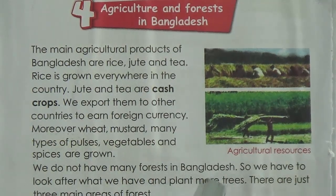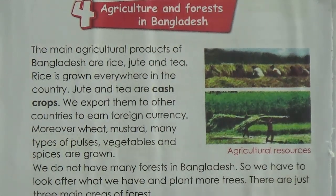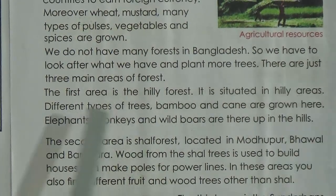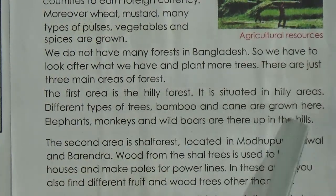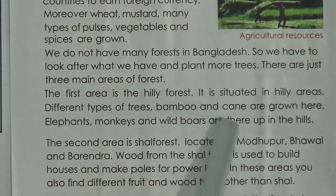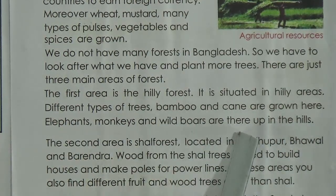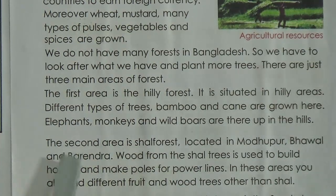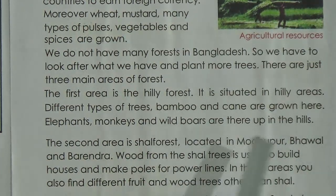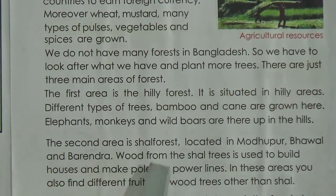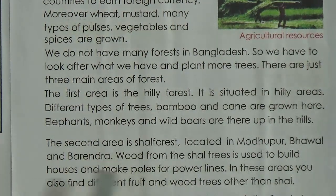We do not have many forests in Bangladesh, so we have to look after what we have and plant more trees. There are three main areas of forest. The first is the hilly forest in hilly areas, where different types of trees, bamboo, and cane are grown, and elephants, monkeys, and wild boars are found. The second area is the shal forest, located in Modhupur, Bhawal, and Barindra — wood from shal trees is used to build houses and make poles.